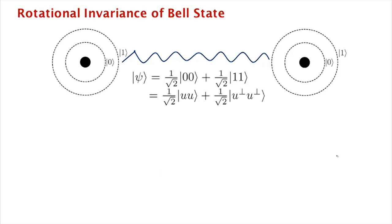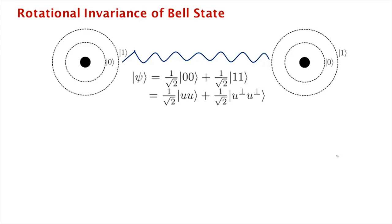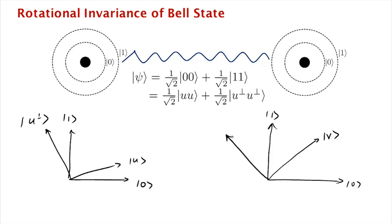Now let's look at a slightly different scenario with these two qubits. Same thing as before, we have the 0, 1 basis for the first qubit, the u, u perp basis. And now let's look at, for the second qubit, let's measure it in the v, v perp basis.